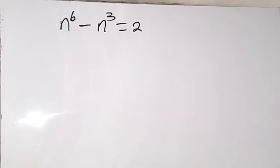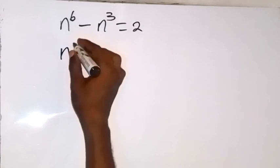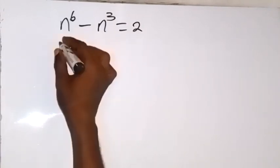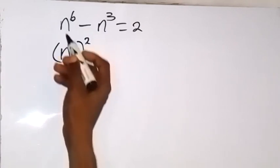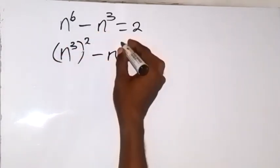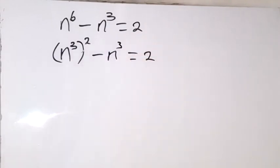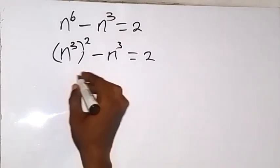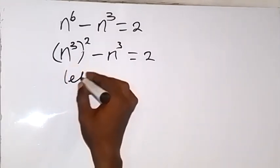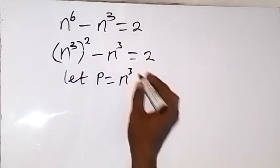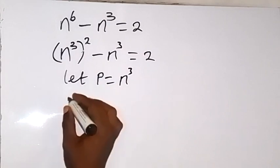Thank you for joining us. We want to find the real solution to this problem. Let's write this in another way and say this is n raised to power 3, then raised to power 2, as this will give us back n raised to power 6, then minus n raised to power 3 equals 2. From here we can use a letter to represent n raised to power 3, so let's use letter p. Let p be equal to n raised to power 3, so we write p squared.